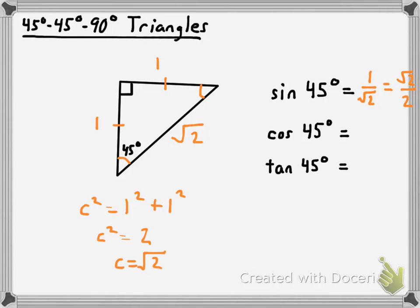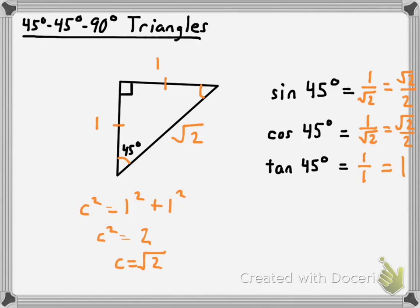The cosine of a 45 degree angle: the adjacent leg is 1 and the hypotenuse is √2, so the cosine of 45 degrees is exactly the same as the sine — 1/√2 or √2/2. The tangent of 45 degrees is the ratio between the opposite leg and the adjacent leg: 1 over 1, which is just 1. That just means the legs of a 45-45-90 right triangle are equal to one another.